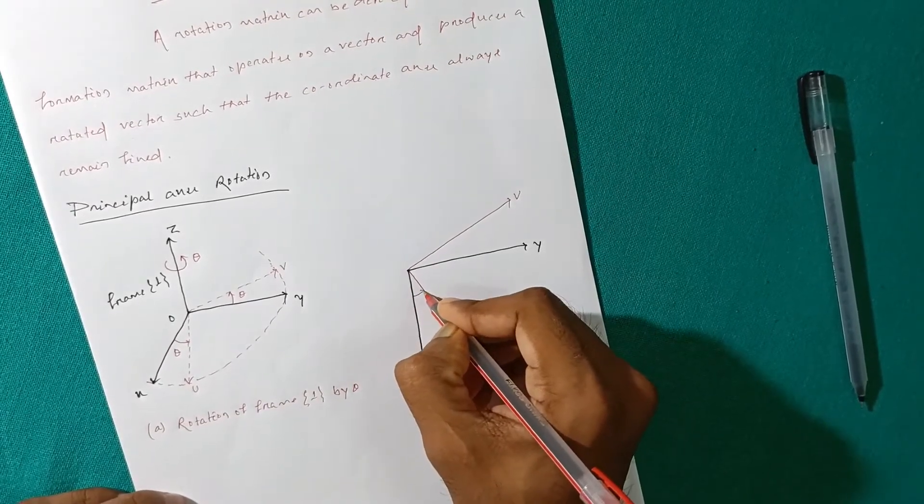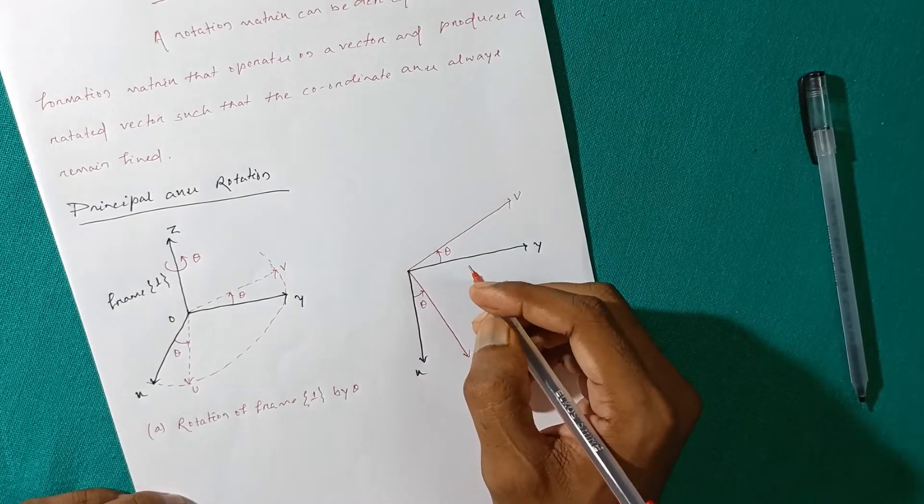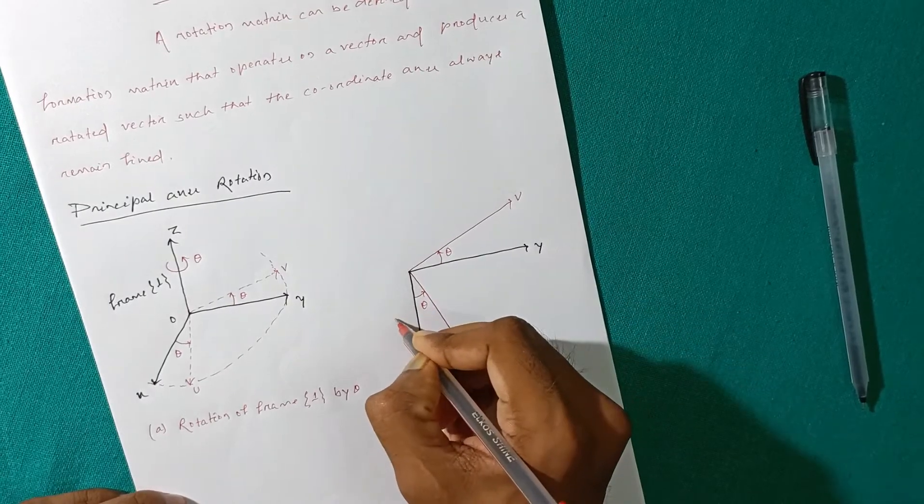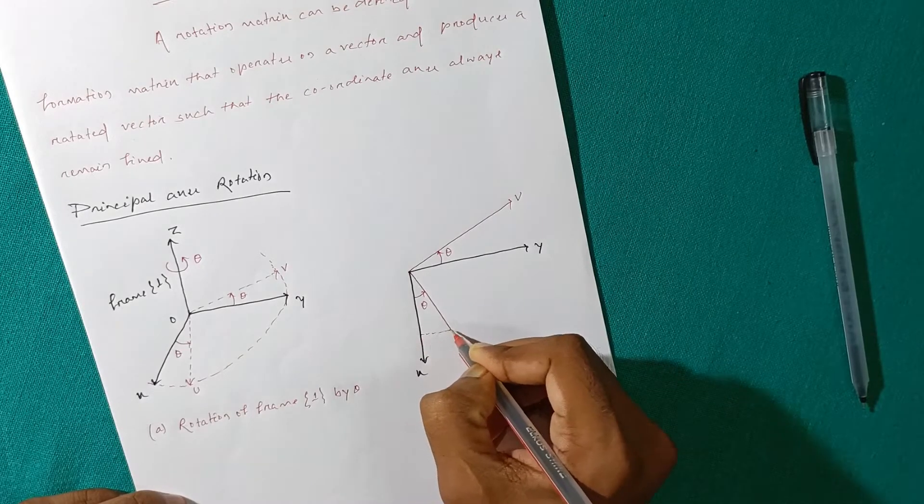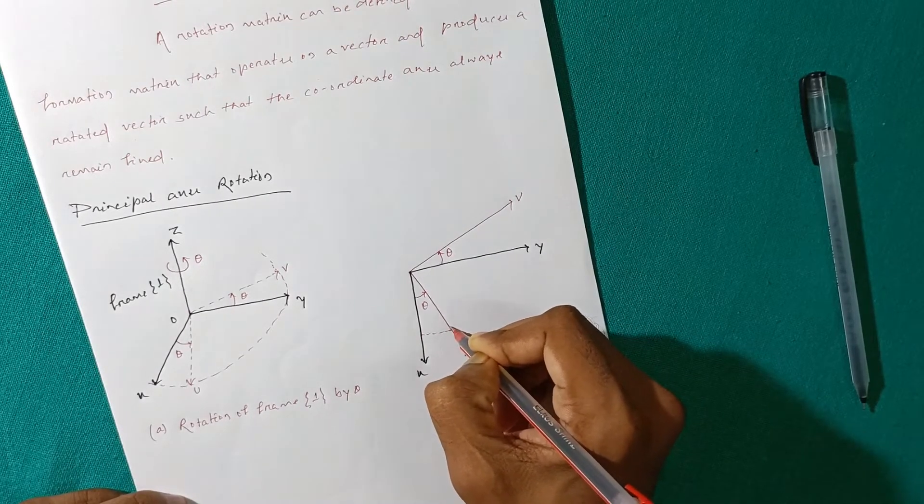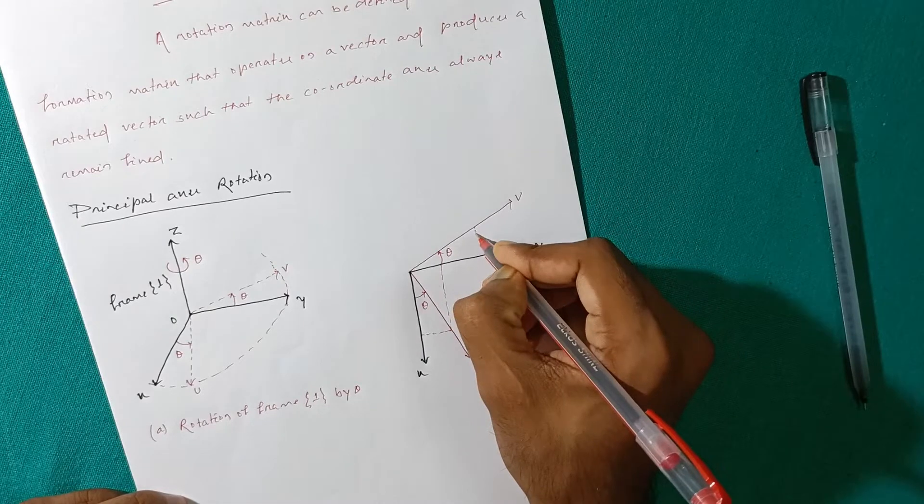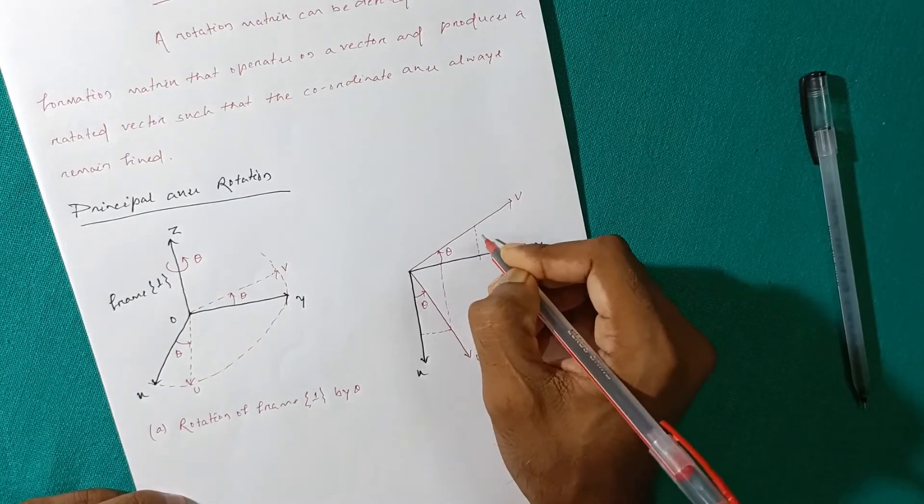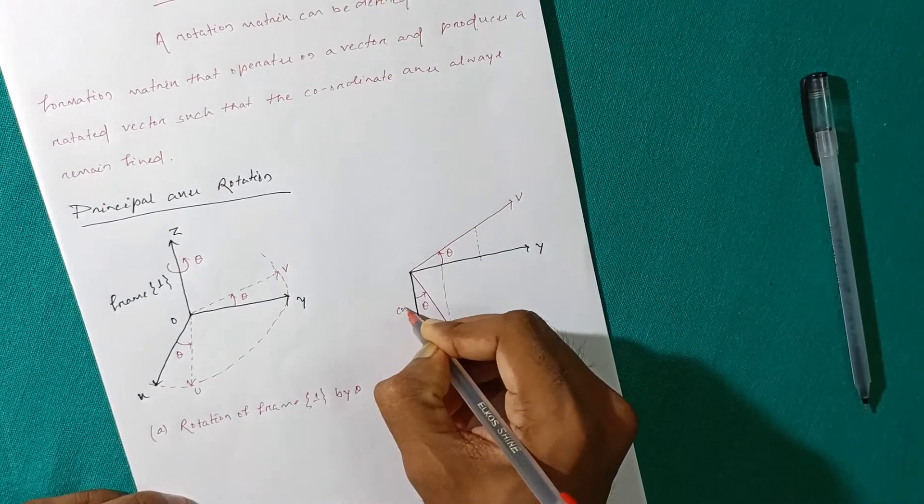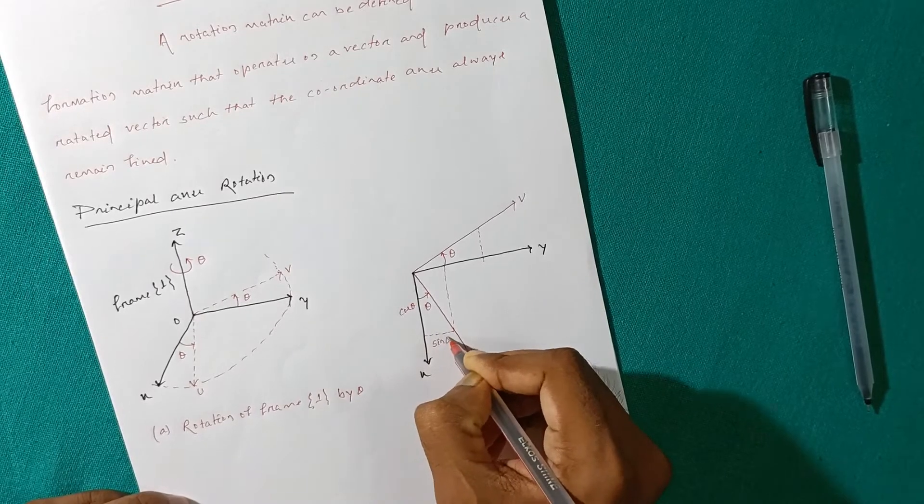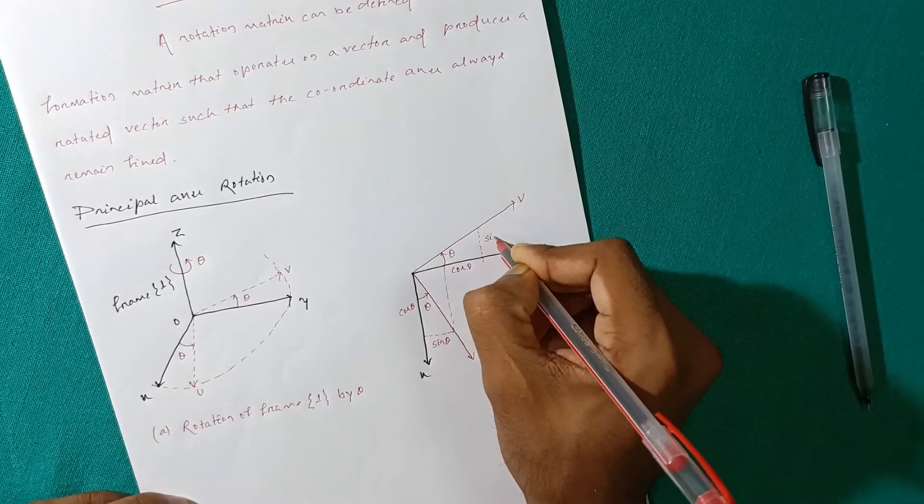So what we have got previously this is V and this is U. This angle is theta, this angle is also theta. So this angle is theta means if you can draw this.